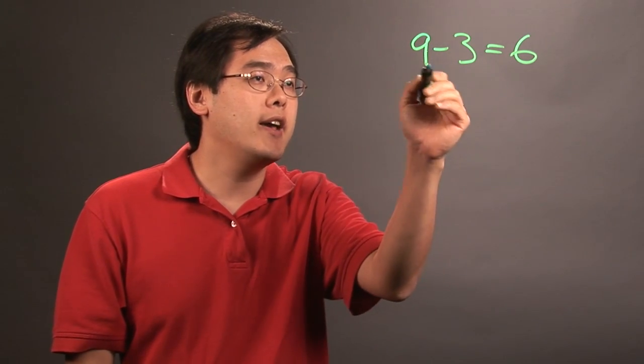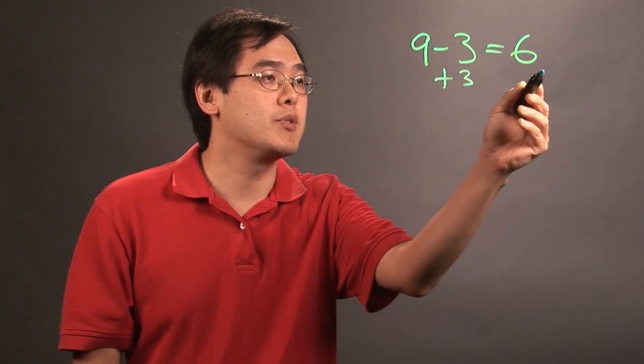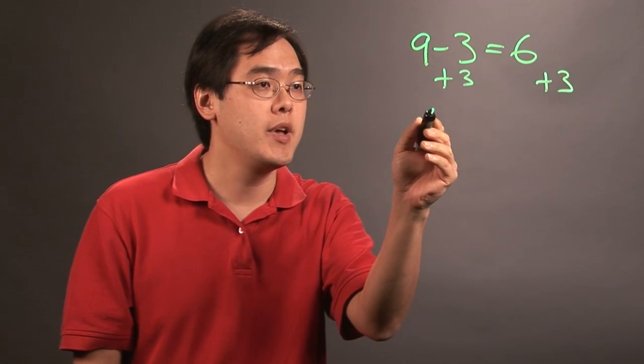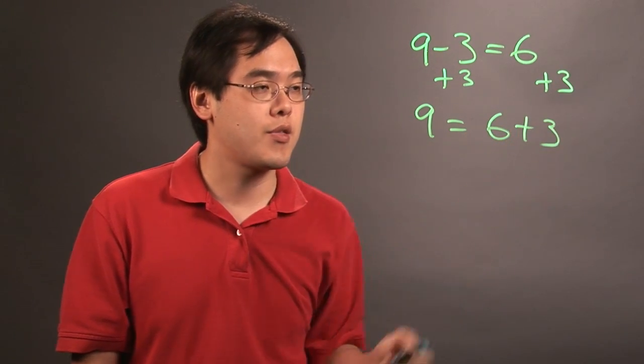So to verify and check that 9 minus 3 equals 6, what you can do is add 3 to both sides. That's where using the addition comes from, and you have 9 equals 6 plus 3.